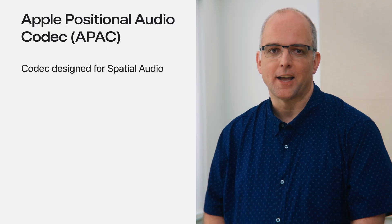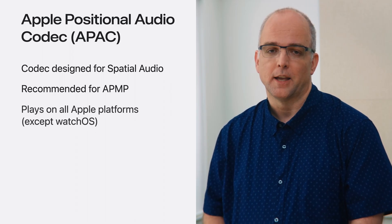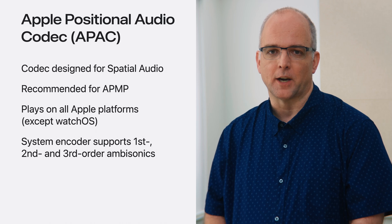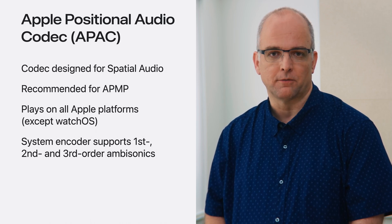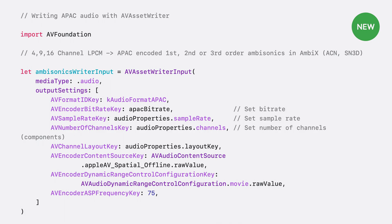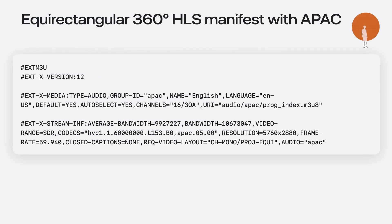Apple Positional Audio Codec is a high-efficiency spatial audio codec recommended for encoding spatial audio, including ambisonics, with APMP video. APAC decodes on all Apple platforms except watchOS. The built-in APAC encoder, accessible via AV Asset Writer on iOS, macOS, and visionOS, supports first, second, and third order ambisonics. This code shows the minimal output settings required to encode first, second, or third order ambisonics using AV Asset Writer. Recommended bit rates for ambisonics encoded to APAC for APMP range from 384 kilobits per second for first order to 768 kilobits per second for third order. APAC audio can be segmented and streamed via HLS. Here's an example of a monoscopic equirectangular video with APAC audio encoding a third order ambisonic track.